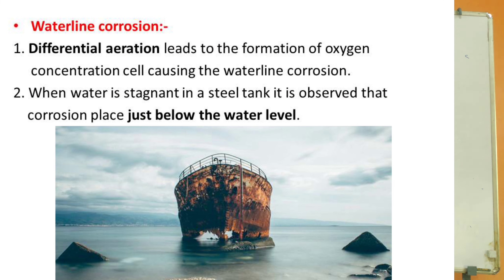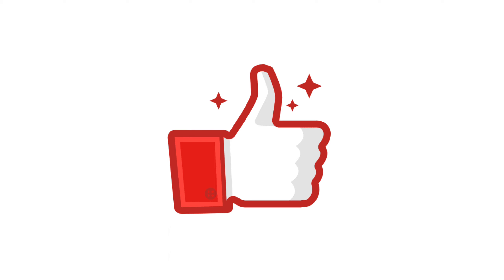Third is water line corrosion, a case of differential aeration corrosion. As in ocean-going ships and water storage steel tanks, a portion of the metal is always under water. The part of the metal below the water is exposed only to dissolved oxygen, while the part above the water is exposed to the higher oxygen concentration of the atmosphere. Thus the part of the metal below the water acts as anode and undergoes corrosion, while the part above the water line is free from corrosion. Thank you.